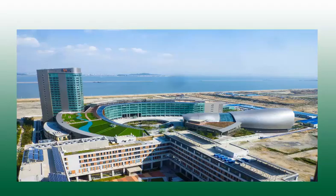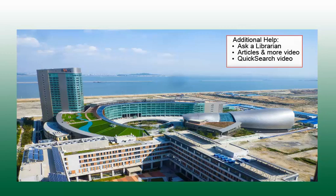Mason Libraries has many electronic resources available for your research needs. The books and more tab is only one way to find and access these items. If you're having trouble or need help, ask a librarian or check out the videos like articles and more and quick search.